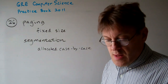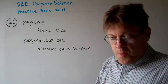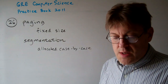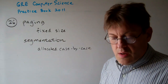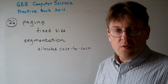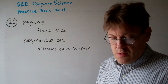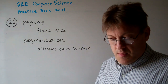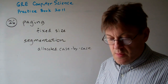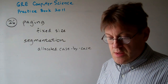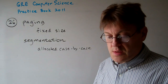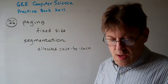A is the answer. B says paging suffers from external fragmentation — no, it's segmentation that suffers from external fragmentation. C says paging requires page tables and segmentation does not require segment tables — but segmentation does require segment tables, so C is incorrect.